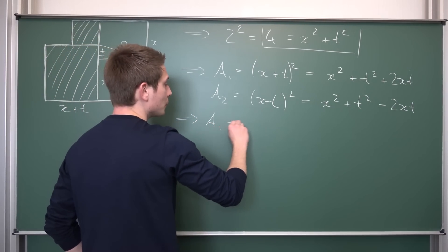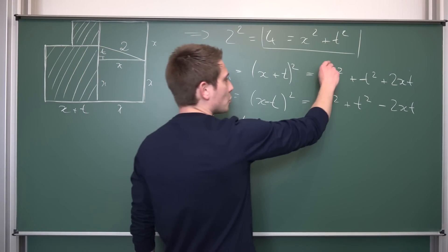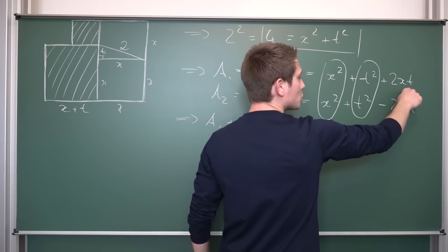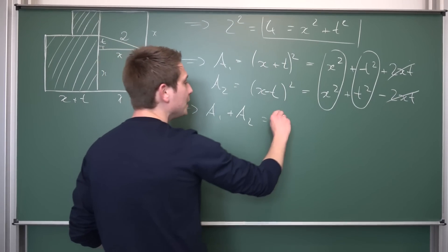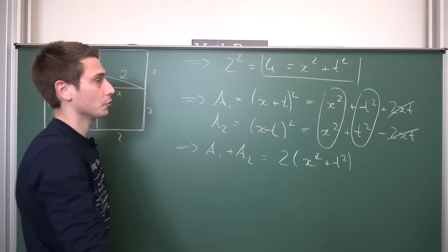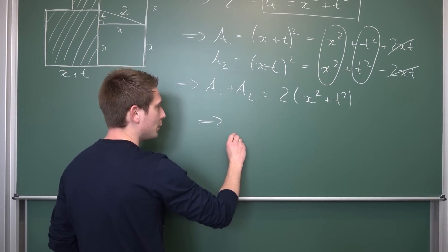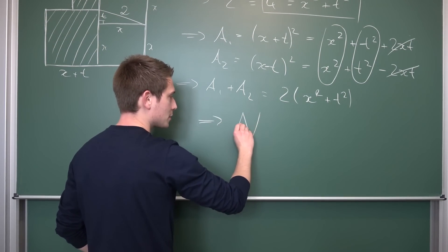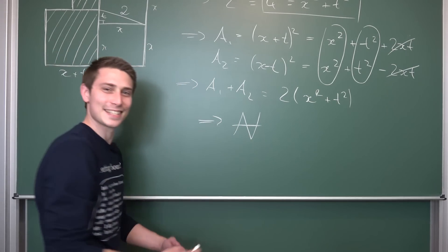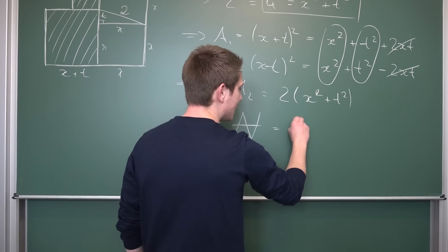The total area is just area 1 plus area 2. Adding those two together, the 2xt and −2xt are additive inverses and cancel out, leaving us with 2 times (x squared plus t squared). Papa Pythagoras told us that x squared plus t squared equals 4, so the total area is 2 times 4, which is 8. And hence we are done!